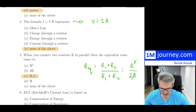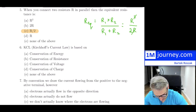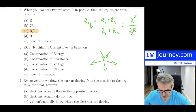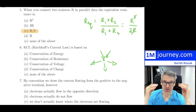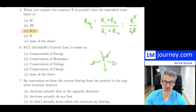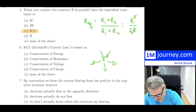Question six: KCL — Kirchhoff's current law — is based on what? If you have a node with currents coming in and out, the summation of all currents equals zero. Current is charge over time, so really it's charge being conserved. Kirchhoff's current law is actually conservation of charge.